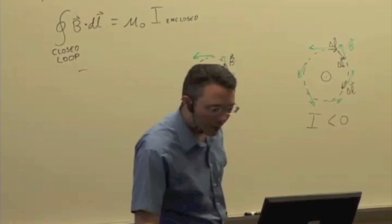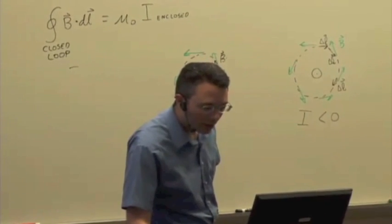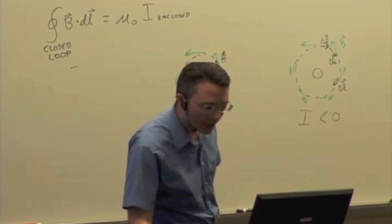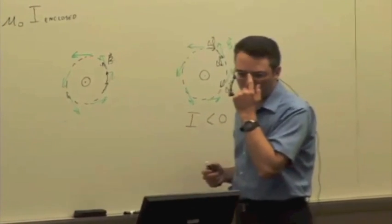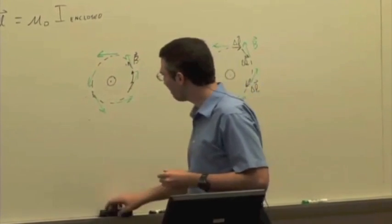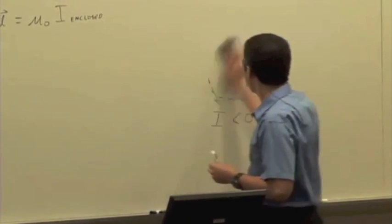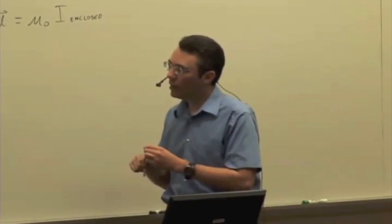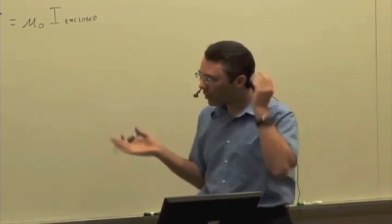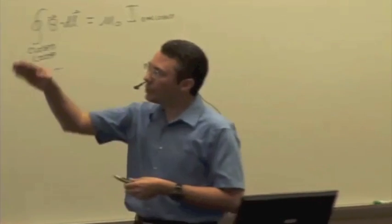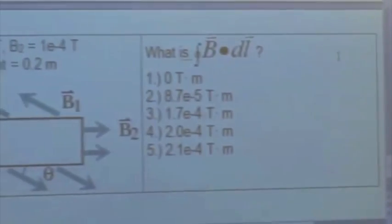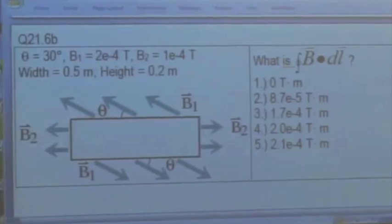So we were looking at this problem last time, and I just want to finish up with this. We were looking at this rectangular path, and this is some pattern of magnetic field, and we're just measuring the magnetic field at various points along this rectangular path. So once again, this isn't a box, it's just a flat, we're looking at the edge of a flat surface.